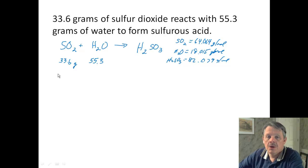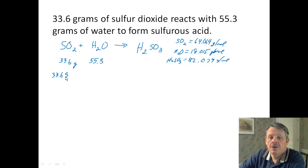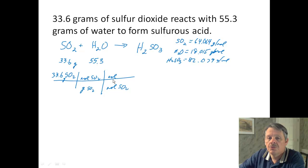All right. So now when we do this, we're going to start with SO2. So we're starting with 33.6 grams of SO2. Now we have to get rid of grams of SO2. Now we have to go to moles of SO2. That's what we always do. And then from there, we can do our stoichiometry piece, which is moles of SO2 to moles of our target substance, which is going to be H2SO3. But we don't want moles of H2SO3. We want grams of H2SO3.